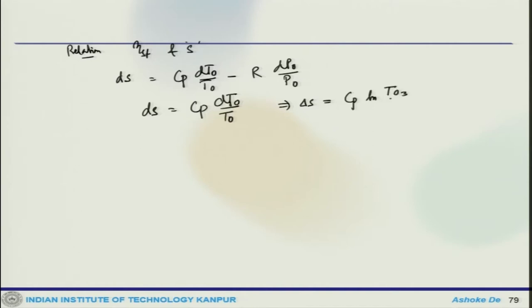Now we can look at the relation between stage efficiency and entropy. Using the entropy diagram, the T-S diagram that we have already drawn, we can write that dS = Cp dT0/T0 - R dP0/P0. It corresponds to same pressure curve, so dS = Cp dT0/T0.